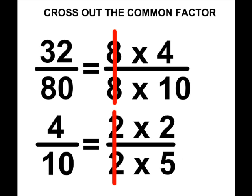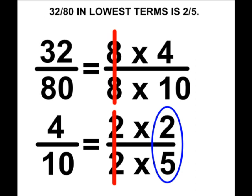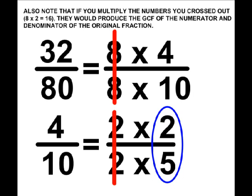If there are no common factors remaining of the numerator and the denominator, we have reduced to lowest terms. So we would say that 32 eightieths in lowest terms is 2 fifths. Now notice how at first we did not reduce all the way. We only reduced some of the way, but eventually we kept examining our new fraction and making sure that we could reduce even further.